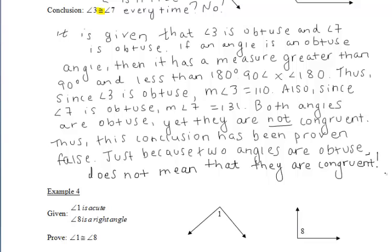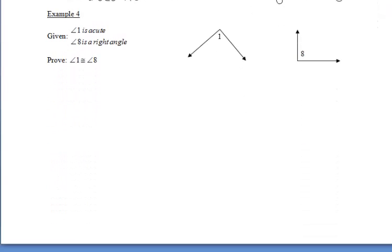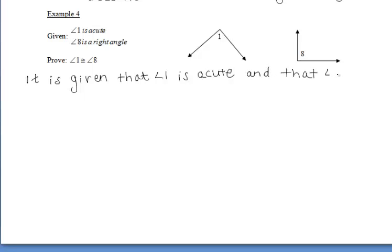Moving on to example 4. In example 4, we're given that angle 1 is acute and that angle 8 is a right angle. We want to prove that angle 1 is congruent to angle 8. Let's write down our given information: it is given that angle 1 is acute, and it is also given that angle 8 is a right angle. Let's look at what we want to prove — that those two angles are congruent.